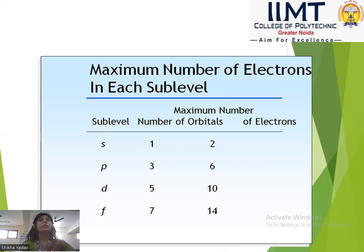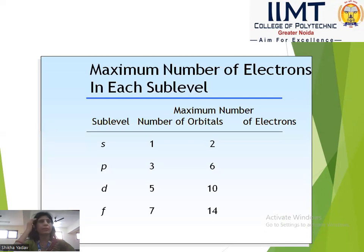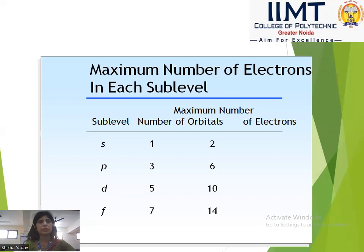Here we have the maximum number of electrons we can fill in each subshell. For subshell s, we have 1 orbital and the maximum is 2 electrons. For p, we have 3 orbitals and the maximum is 6 electrons. For d, we have 5 orbitals and the maximum is 10 electrons. For f, we have 7 orbitals and the maximum is 14 electrons.